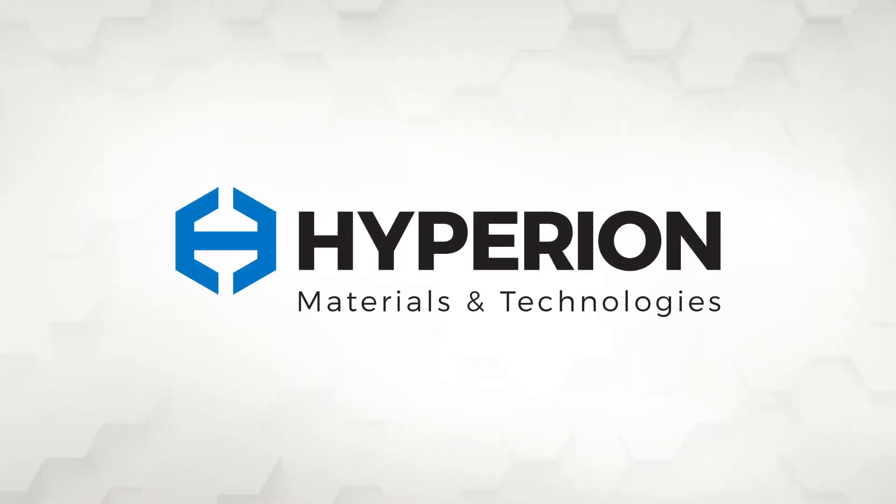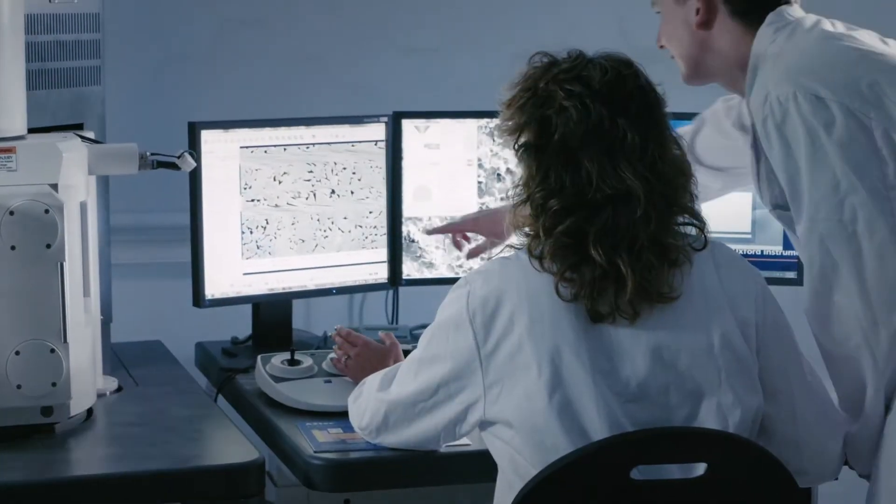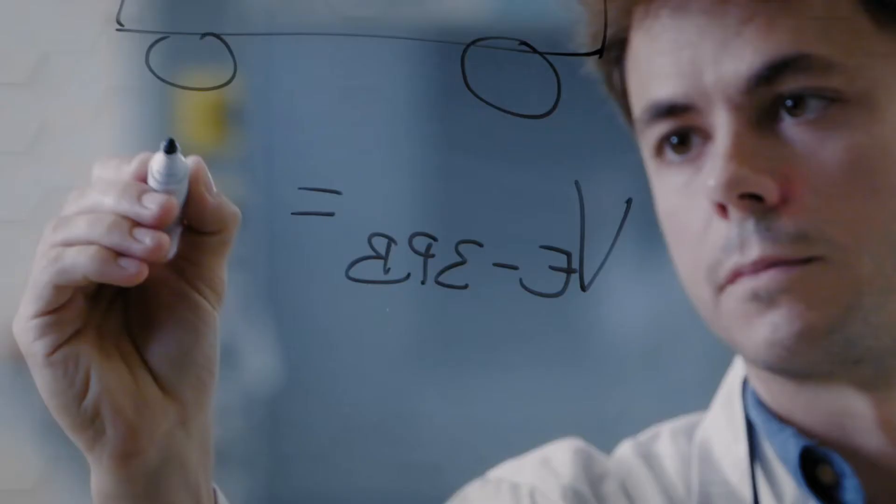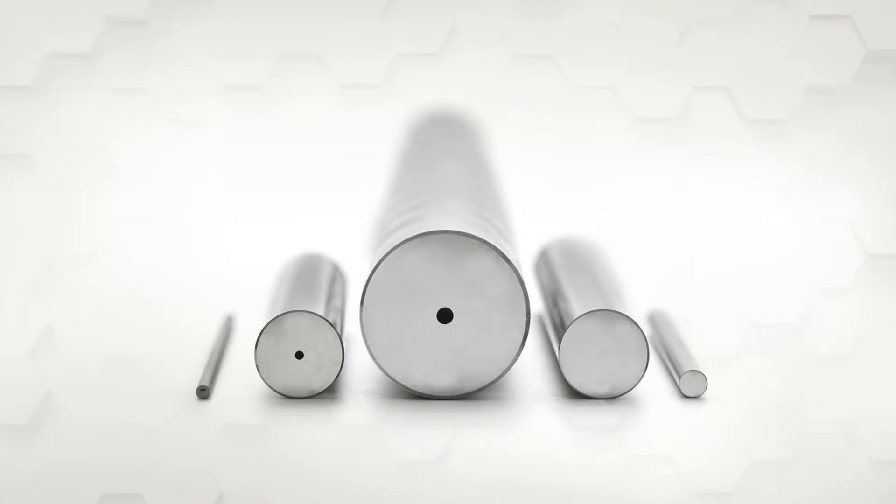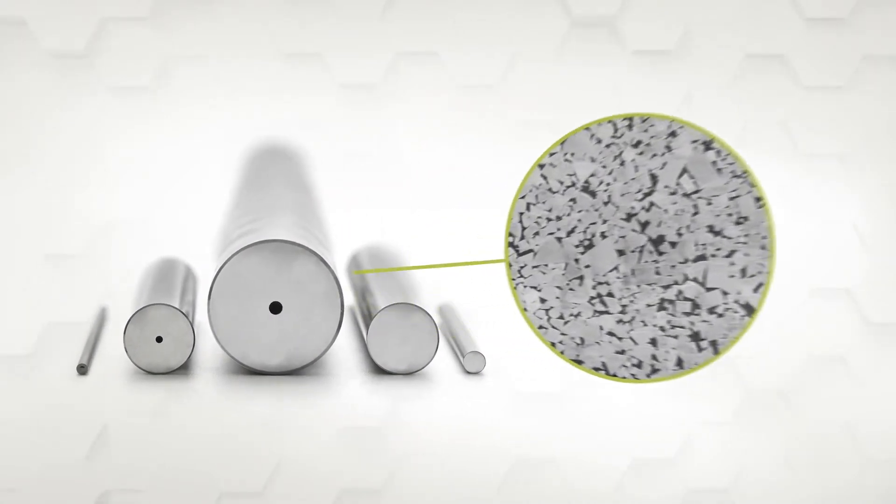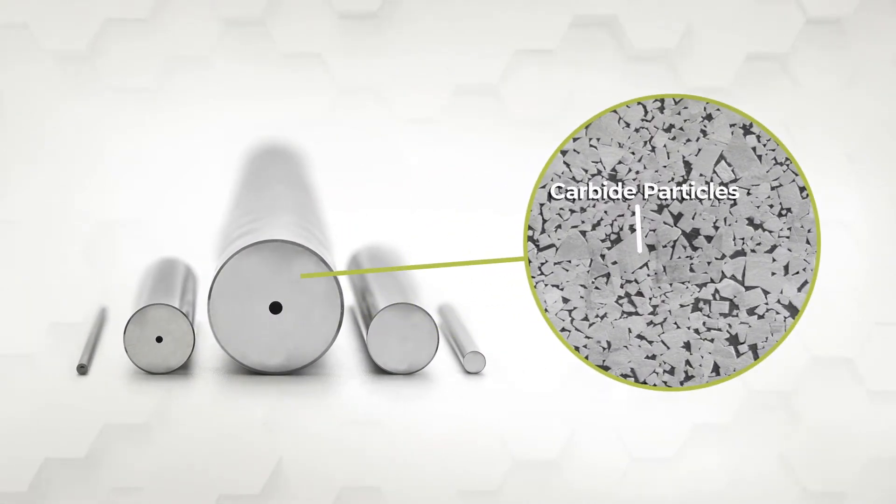Hyperion Materials and Technologies is a global leader in the development and manufacturing of advanced materials, including versatile solutions made with cemented carbide. Cemented carbides are a range of composite materials that consist of hard carbide particles bonded or cemented together by a metallic binder.